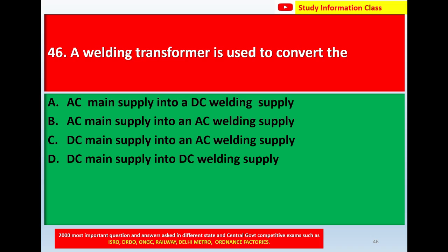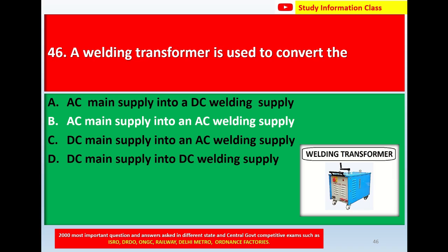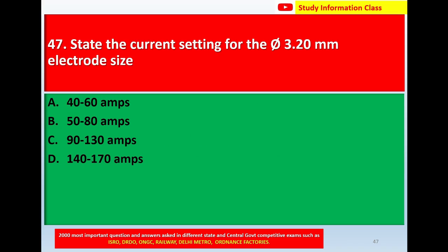Next question, question number 46: A welding transformer is used to convert — option A) AC main supply into DC welding supply, option B) AC main supply into AC welding supply, option C) DC main supply into AC welding supply, option D) DC main supply into DC welding supply. The correct answer is option B — AC main supply into AC welding supply.